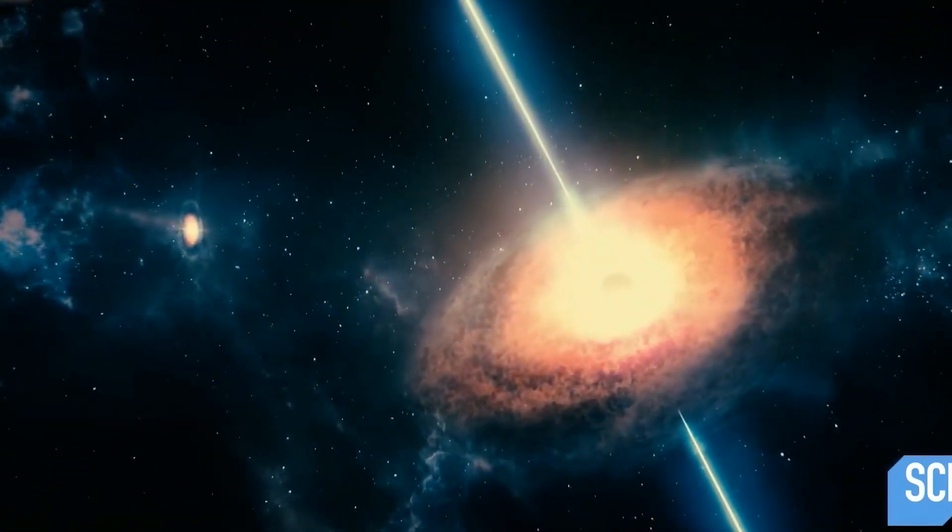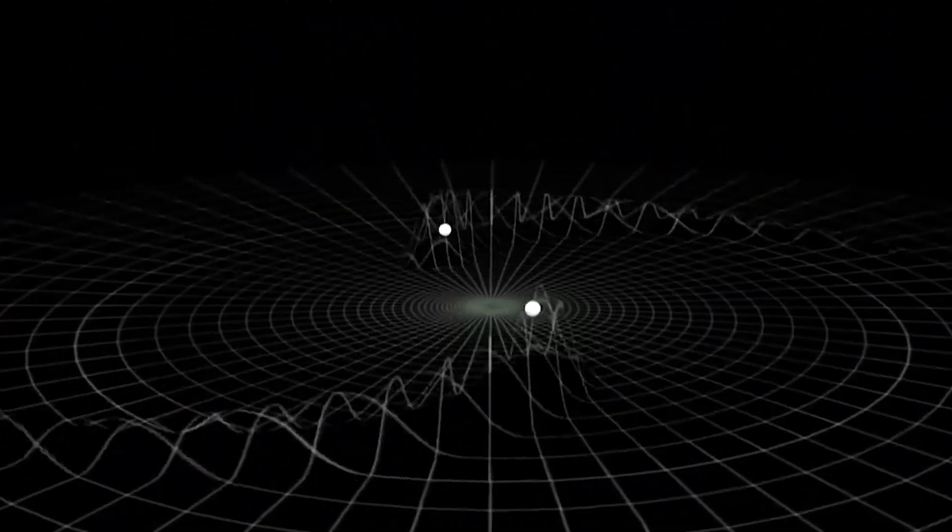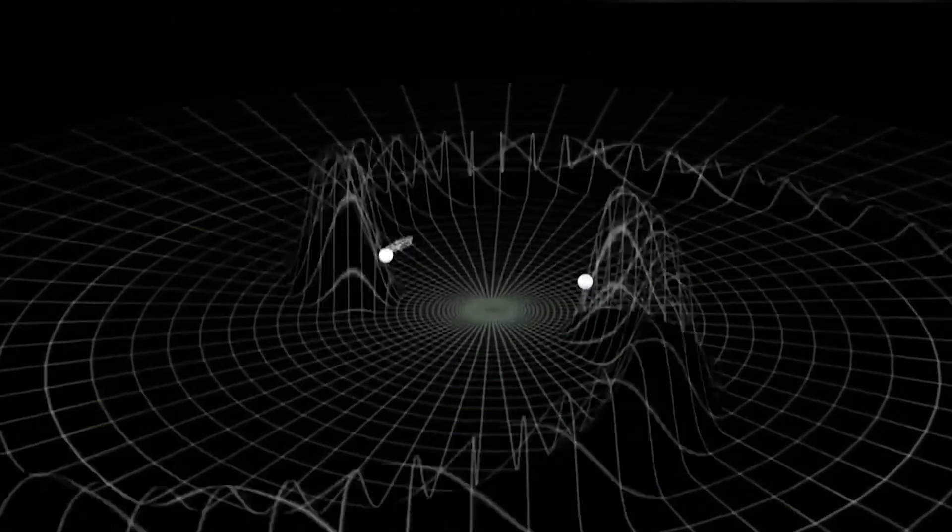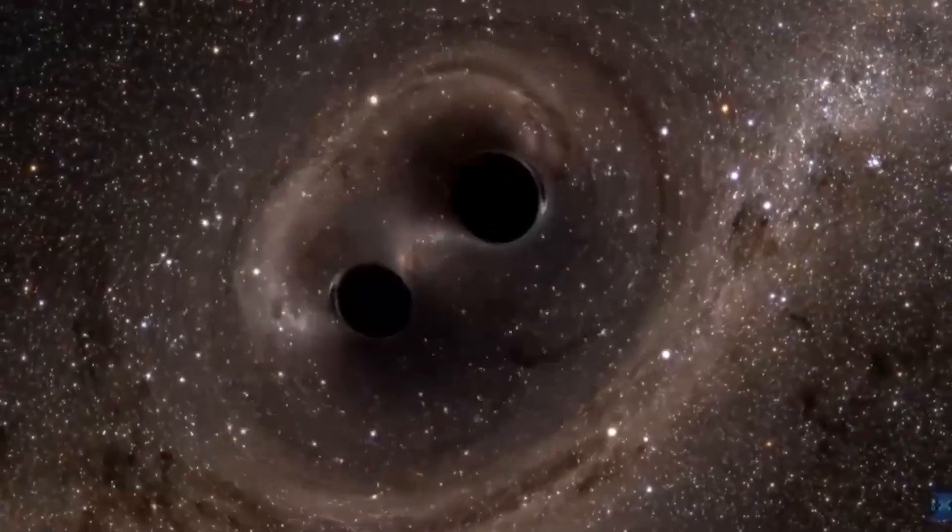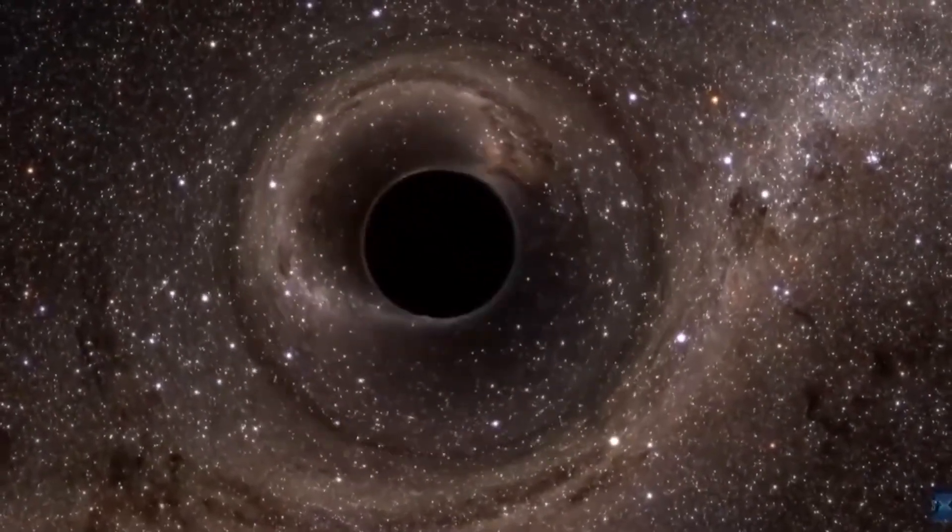glowing gas around it reveals a telltale signature, a dark central region called a shadow, surrounded by a bright ring-like structure. The new view captures light bent by the powerful gravity of the black hole, which is 4 million times more massive than our sun.